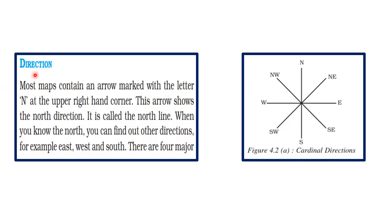The second component of a map is direction. Without the help of direction we can't read the map. As you have seen in many maps, the letter N is marked at the top corner of the map — this is called the north line, meaning the top of the map shows north direction. Top shows north, bottom shows south, right shows east, and left shows west when facing north. These four — north, south, east, and west — are called cardinal directions.